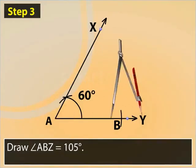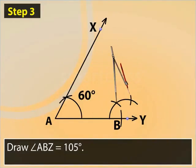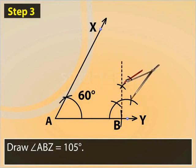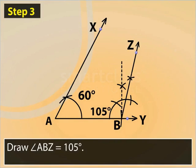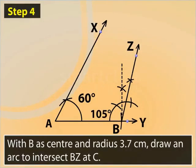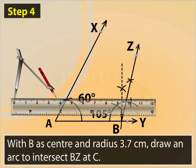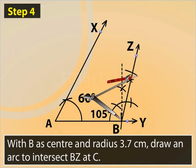Now, draw an angle ABZ measuring 105 degrees. With B as center and radius equal to 3.7 cm, draw an arc intersecting BZ at C.